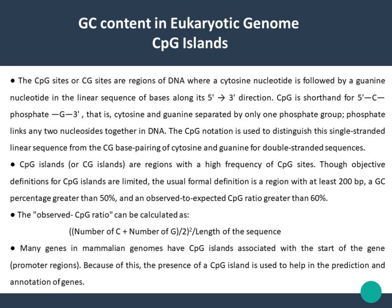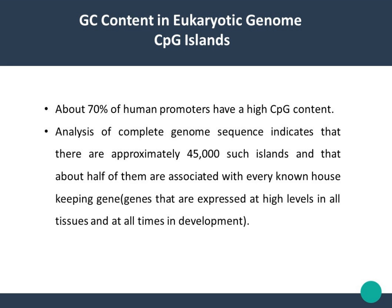Many genes in mammalian genomes have CpG islands associated with the start of the gene, that is promotory genes. Because of this, the presence of a CpG island is used to help in the prediction and annotation of genes. Analysis of the complete human genome sequence indicates that there are approximately 45,000 such islands — about 70% of human promoters have high CpG content.